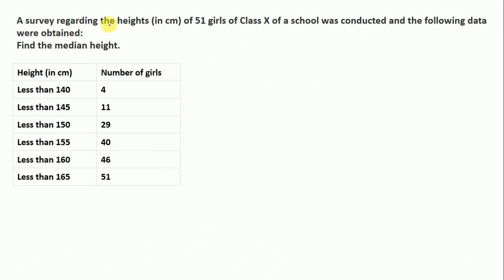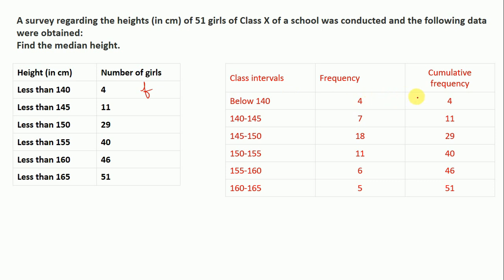A survey regarding the height in cm of 51 girls of class 10th of a school was conducted and the following data were obtained. Find the median of the height. Here we are given the height in cm and the number of girls in that particular height range — that is, the frequency. To find the median, first we have to find the cumulative frequency. Let me show you with this table. These are your class intervals as given in the question, this is your frequency, and this is your cumulative frequency.